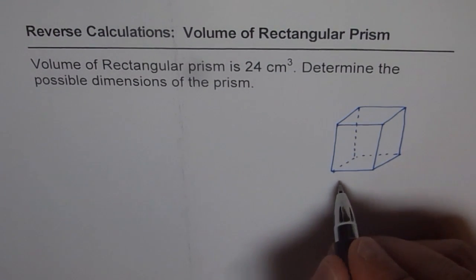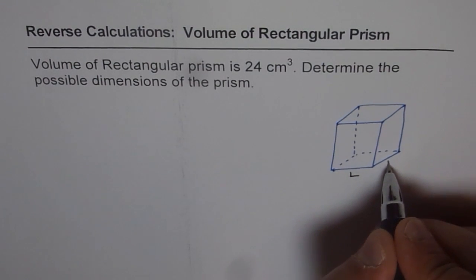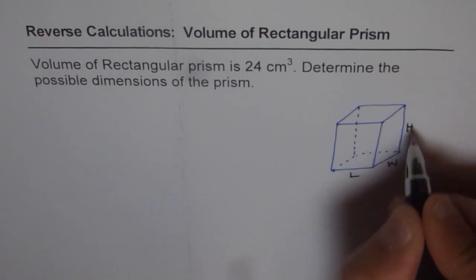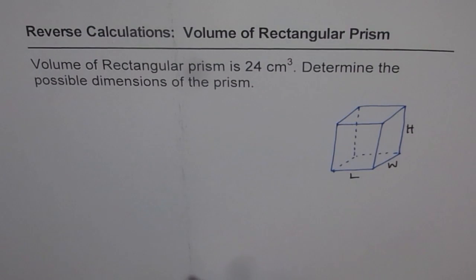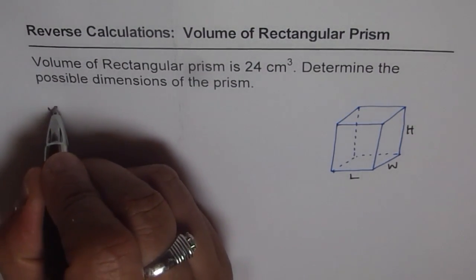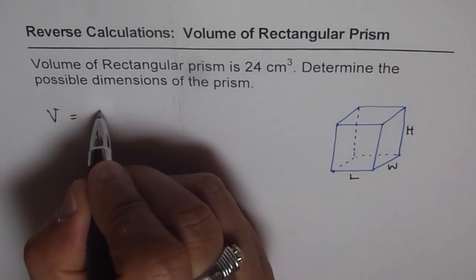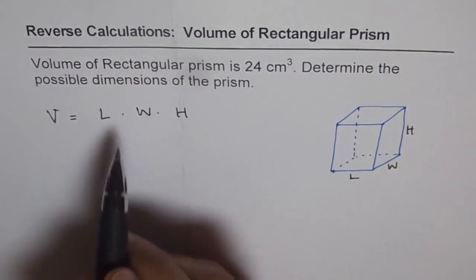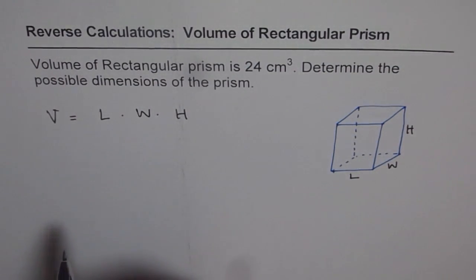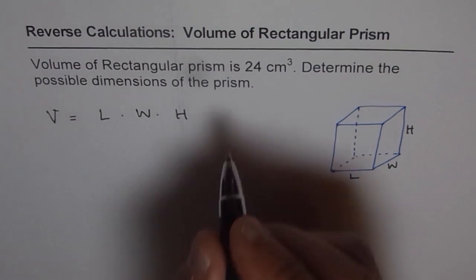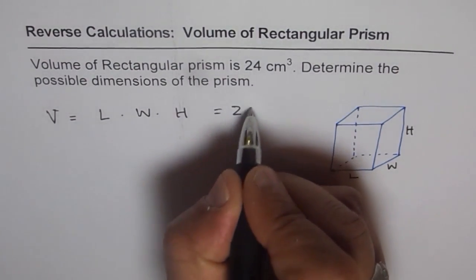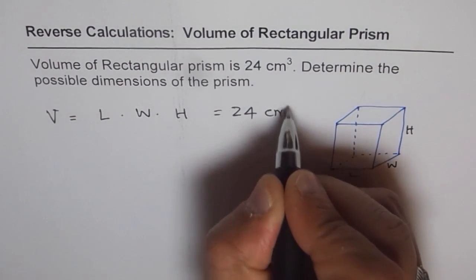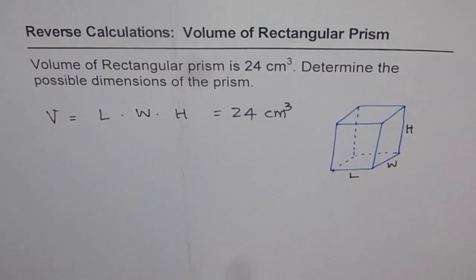Now let us say this is my length, this is width, and that is the height of this rectangular prism. Then what is the volume? Let us say volume V is equal to length times width times height. You can put a dot in between, that also means times, or you can put crosses. But what we are given here is that the volume is 24 cm cube.